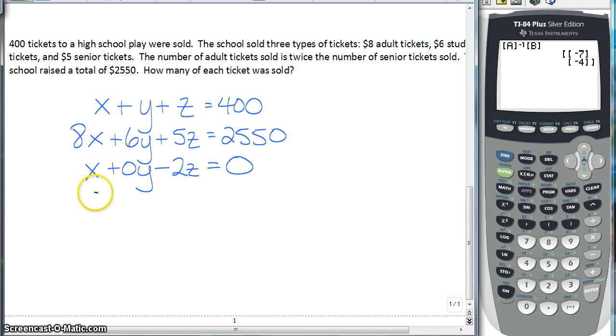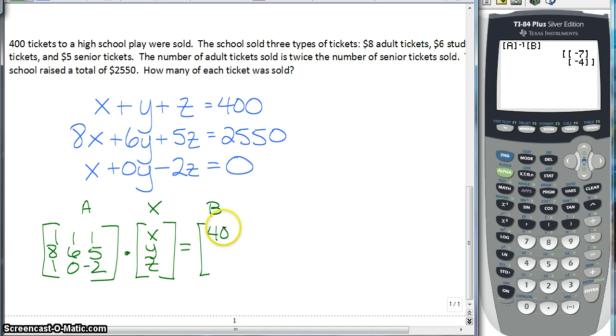So we get rid of this, set up our matrix. So of course, we're going to have matrix A, which is 1, 1, 1, 8, 6, 5, and 1, 0, negative 2 times our variable matrix, which we'll call X, and we have X, Y, and Z. And that's equal to our constant matrix B, which is 400, 2550, and 0.